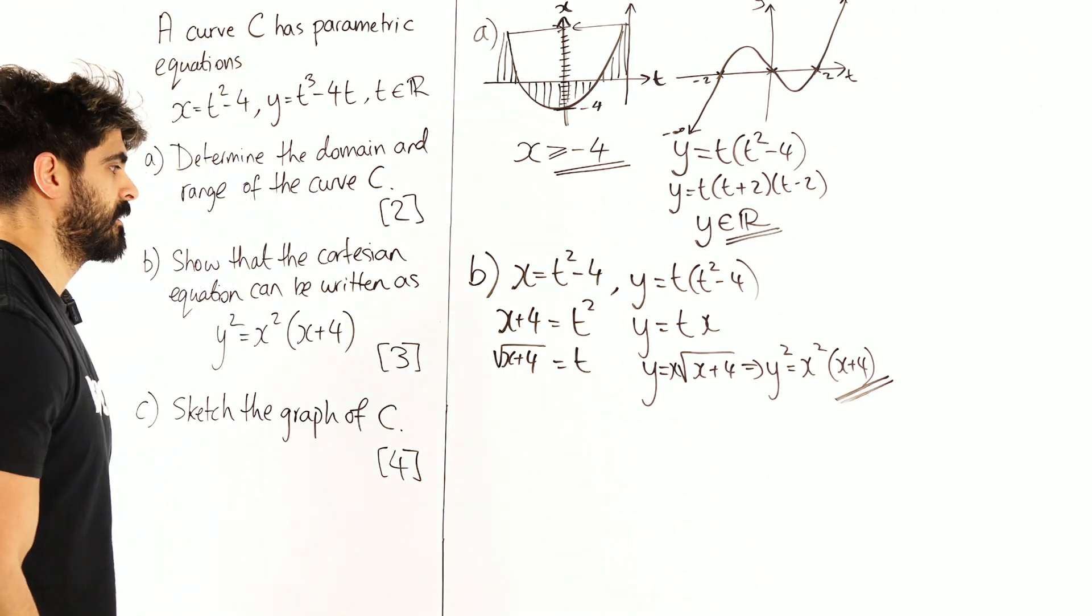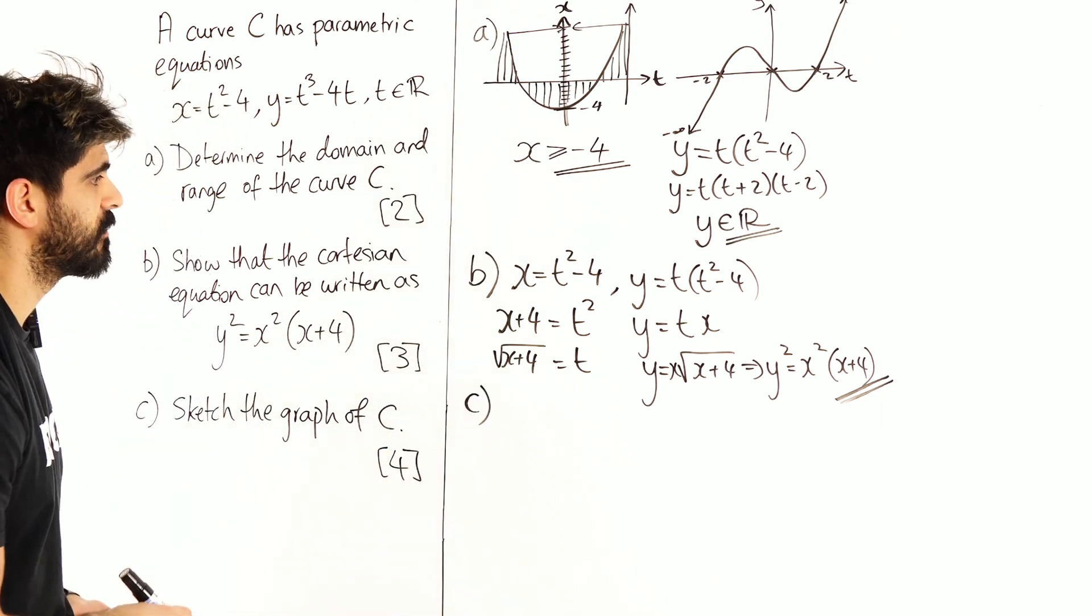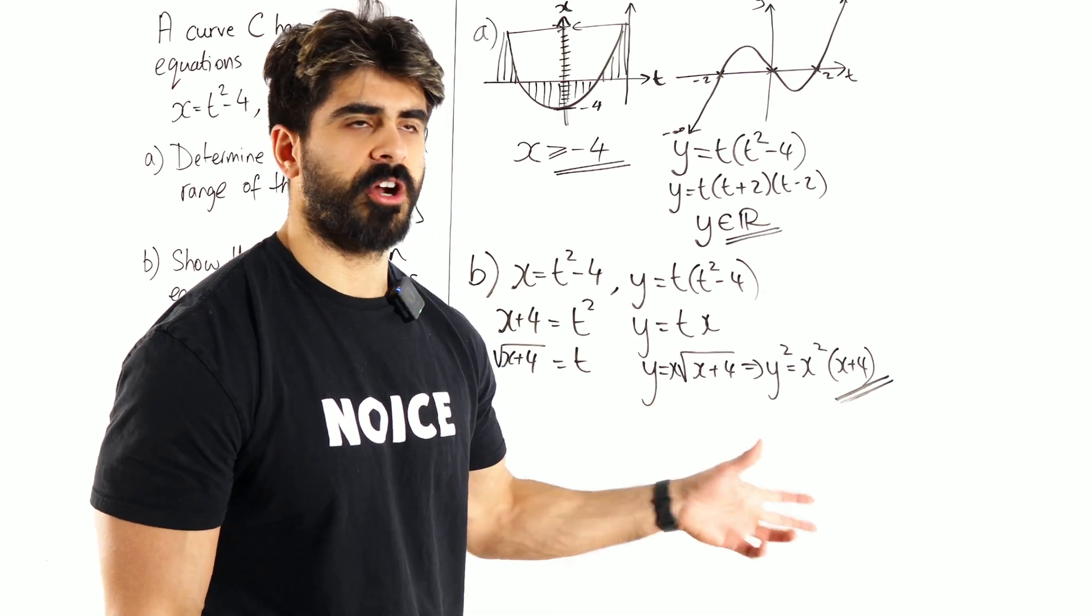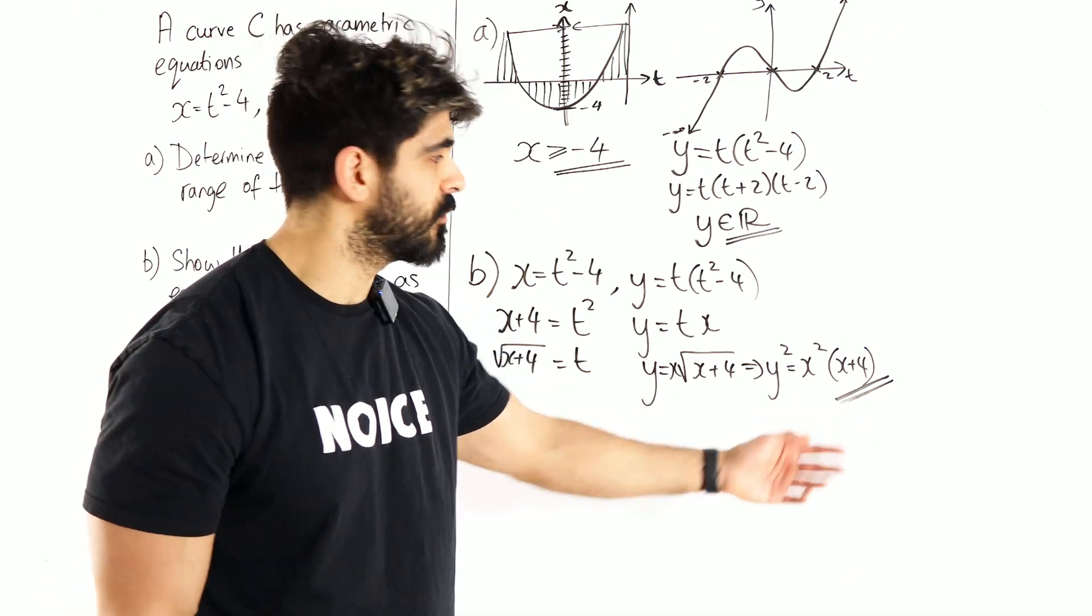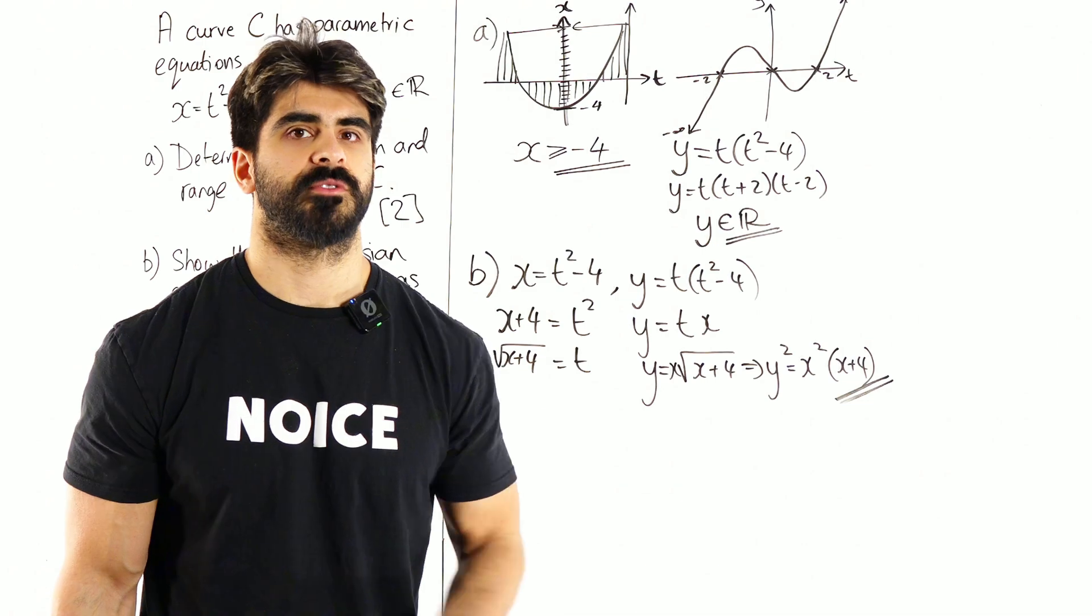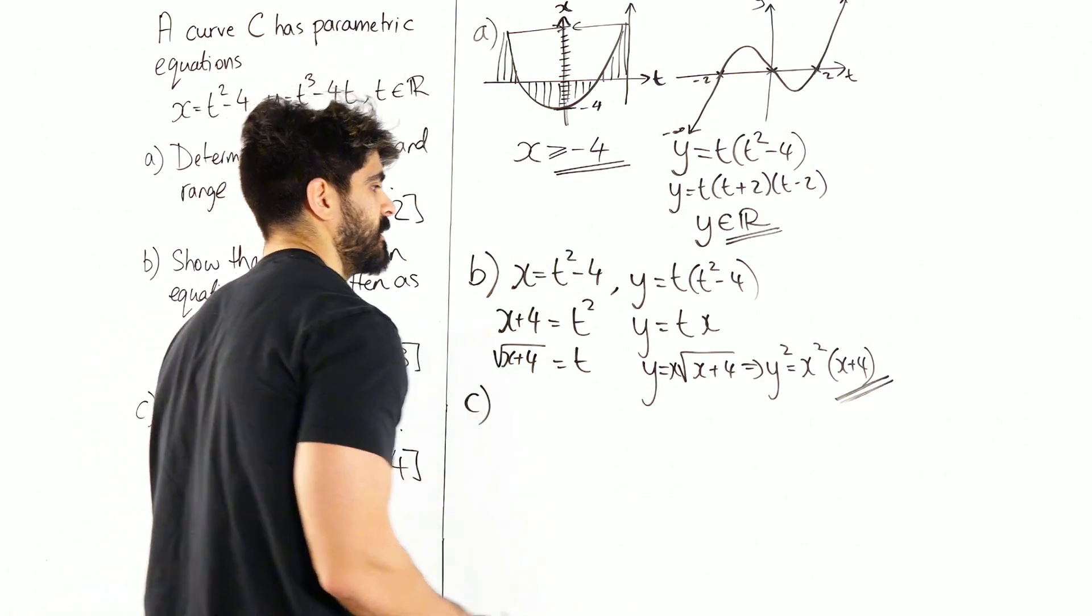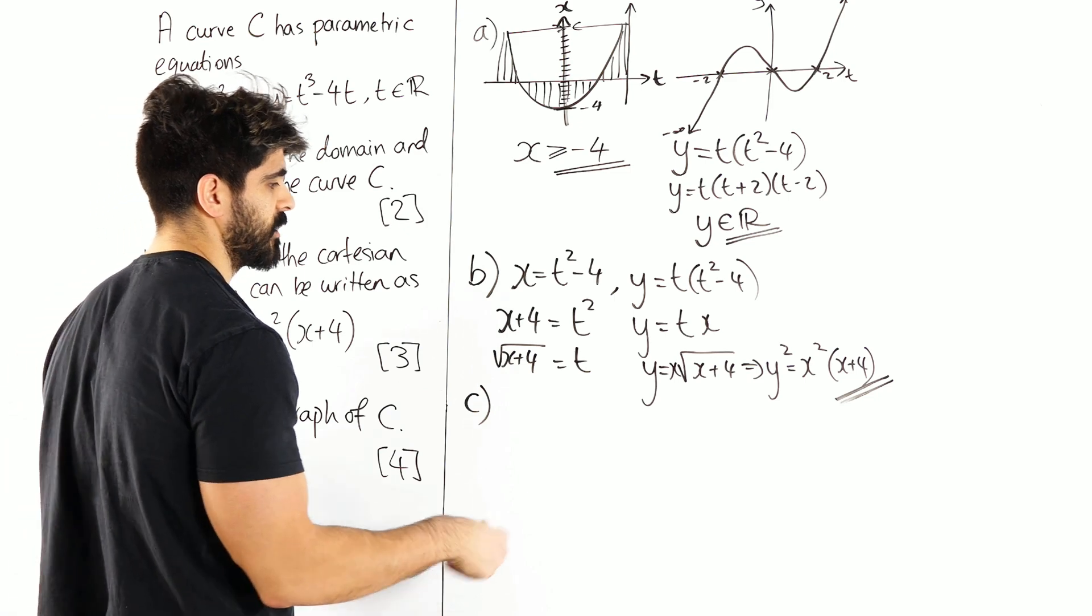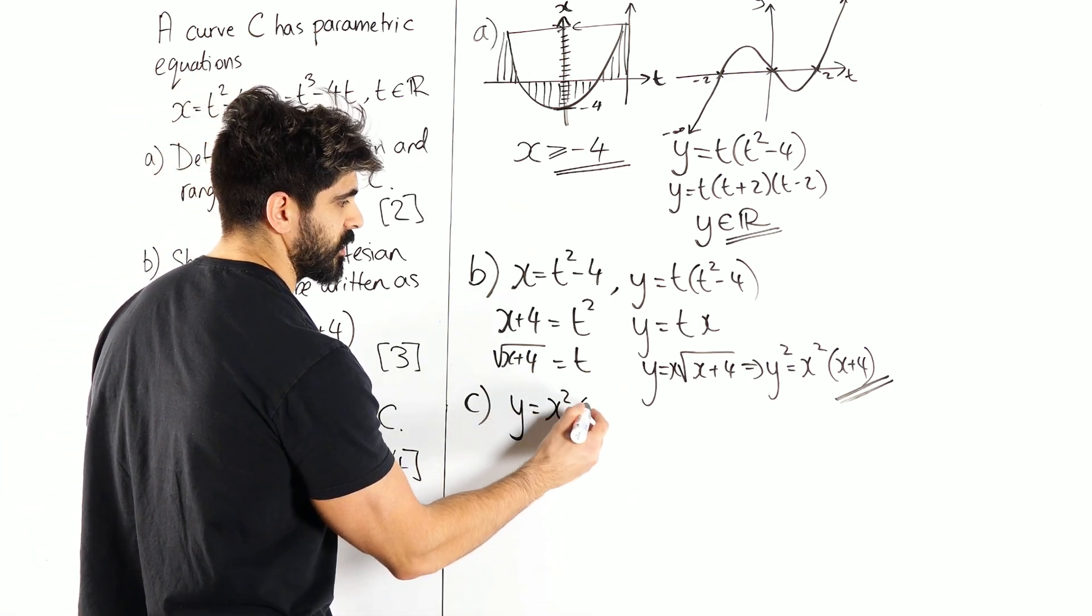Okay, so part C is asking us to sketch this graph. Sketch this. Battery died. Can't remember what I was saying, but something about, I don't think we sketch stuff like this before. Or you might not have seen how to sketch stuff like this before. But what we have done is sketching y equals, not y squared. Well let's focus on the y equals.